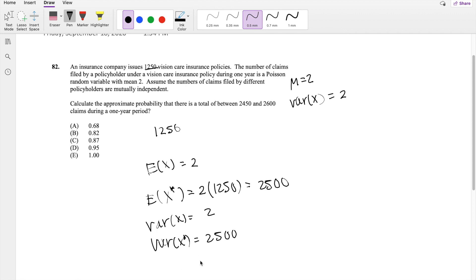And so in order for us to use normal approximation, we need to find the standard deviation. So the standard deviation of x star is equal to the square root of 2500, which is equal to 50. So honestly, we have all the ingredients we need to solve this problem. So they're saying, what is the probability that there's a total of 2450 and 2600? This is x star, by the way.